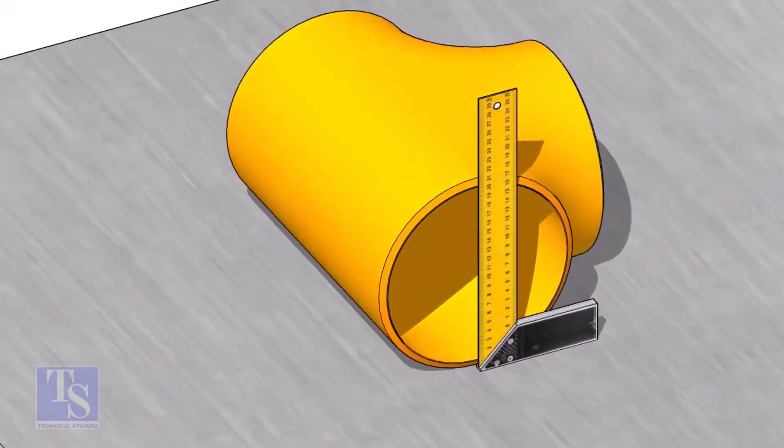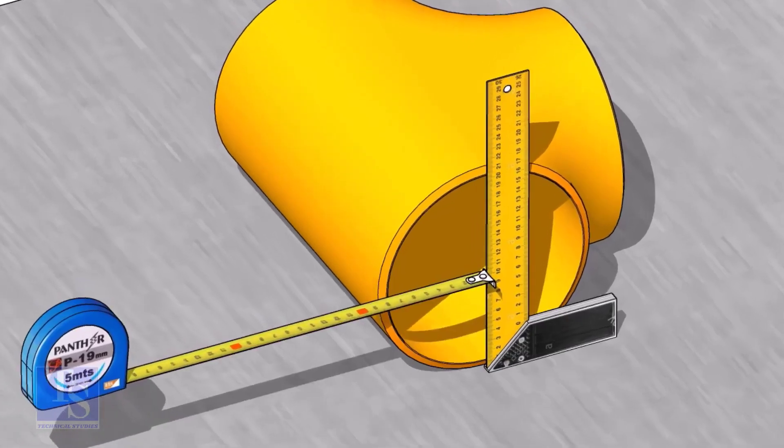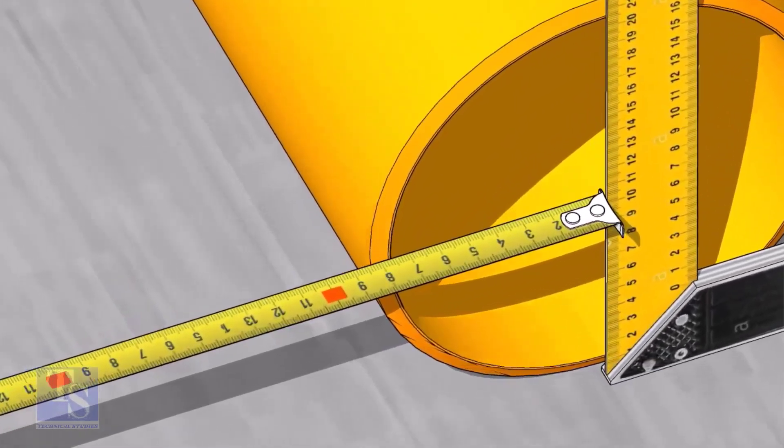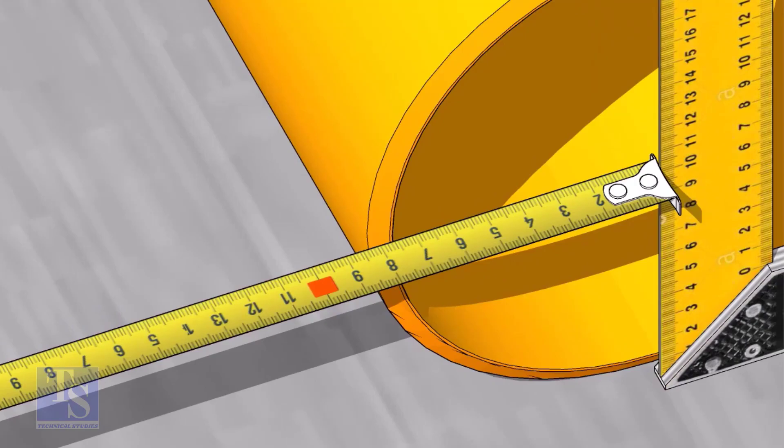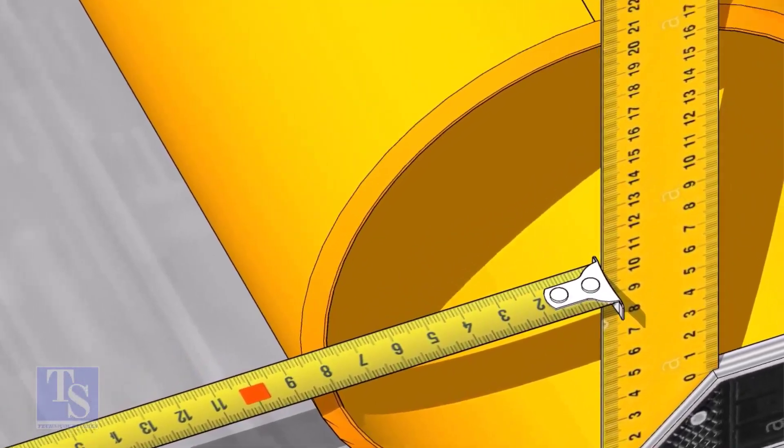Now, put a right angle at the face of the tee, as shown. Move the right angle until its face reaches the center of the tee, which is half OD, 84 mm from the outer face of the tee.